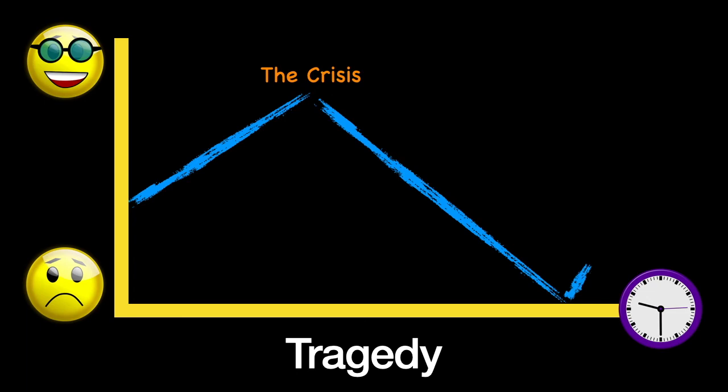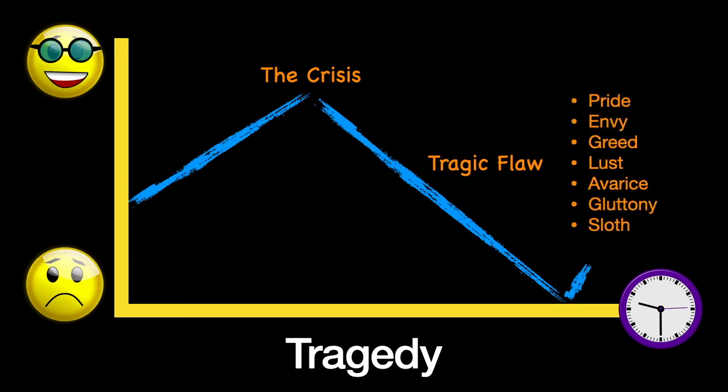In our protagonist, we usually have some kind of character defect. Many times these character defects are related to the seven deadly sins: pride, envy, greed, lust, avarice, gluttony, and sloth. These protagonists bring about their own downfall, which is why perhaps we don't feel too sorry for them at the end of the play when they get what's been coming to them.